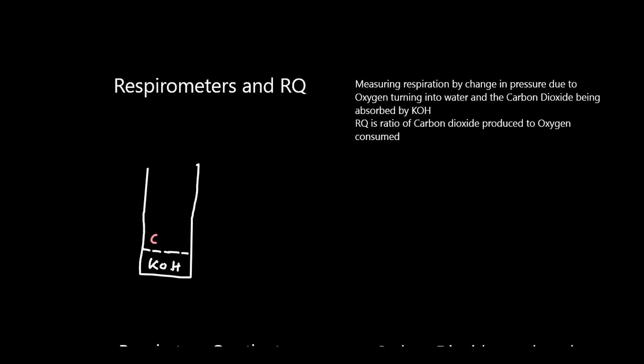You have your respiring organism. Now this may be a mung bean or it may be a maggot, but it's respiring through aerobic respiration, and it's producing carbon dioxide. The carbon dioxide that it produces is being absorbed by the soda lime.